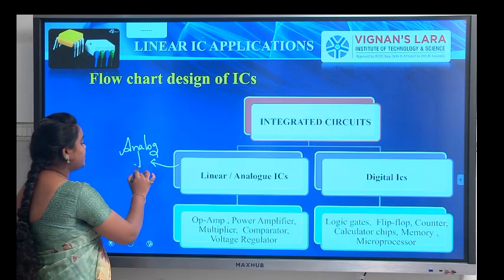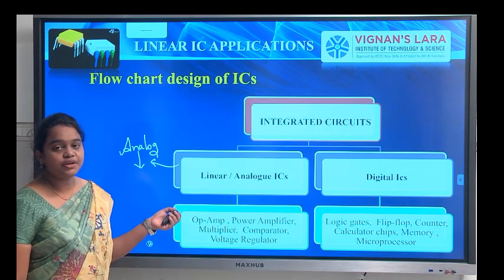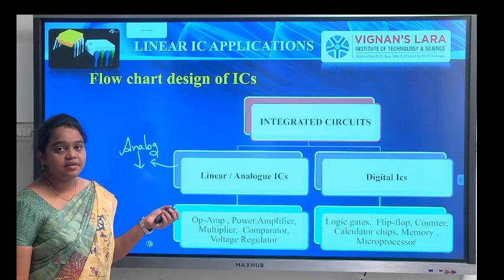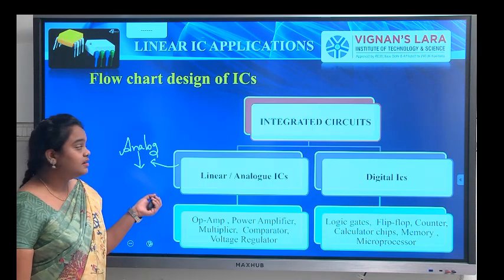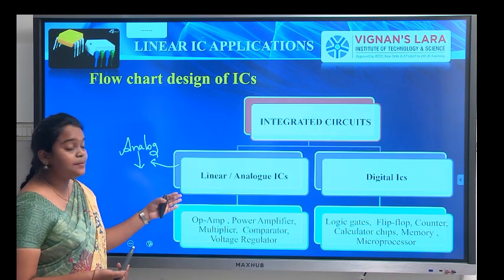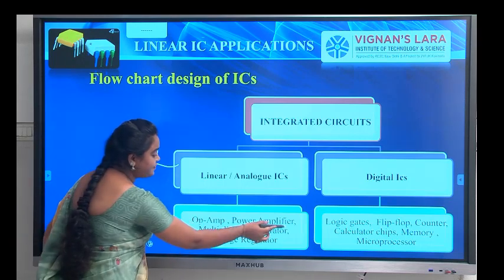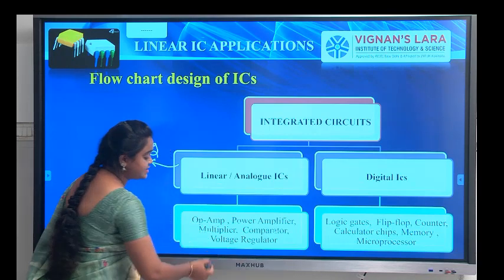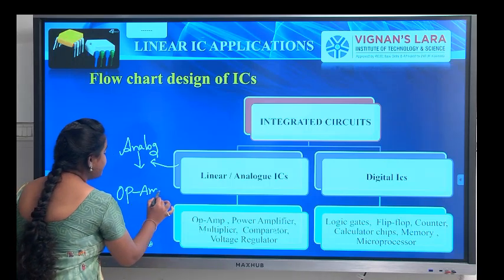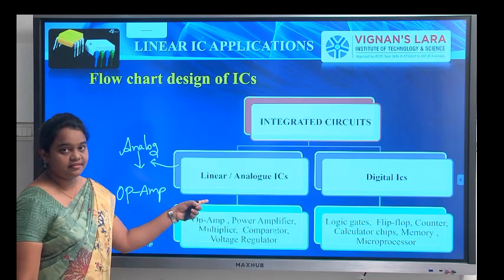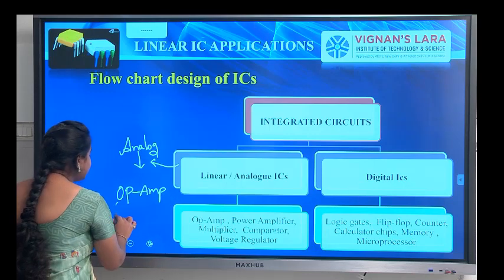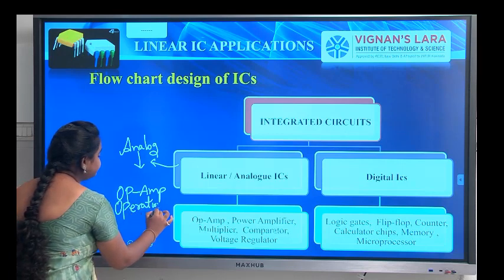Analog input means the signal which varies continuously with respect to time. Examples of Linear ICs include op-amps, power amplifiers, multipliers, comparators, and voltage regulators. In this subject, we are going to learn about op-amps. Op-amp means Operational Amplifier, and it is a Linear IC to which we give a signal in analog form.